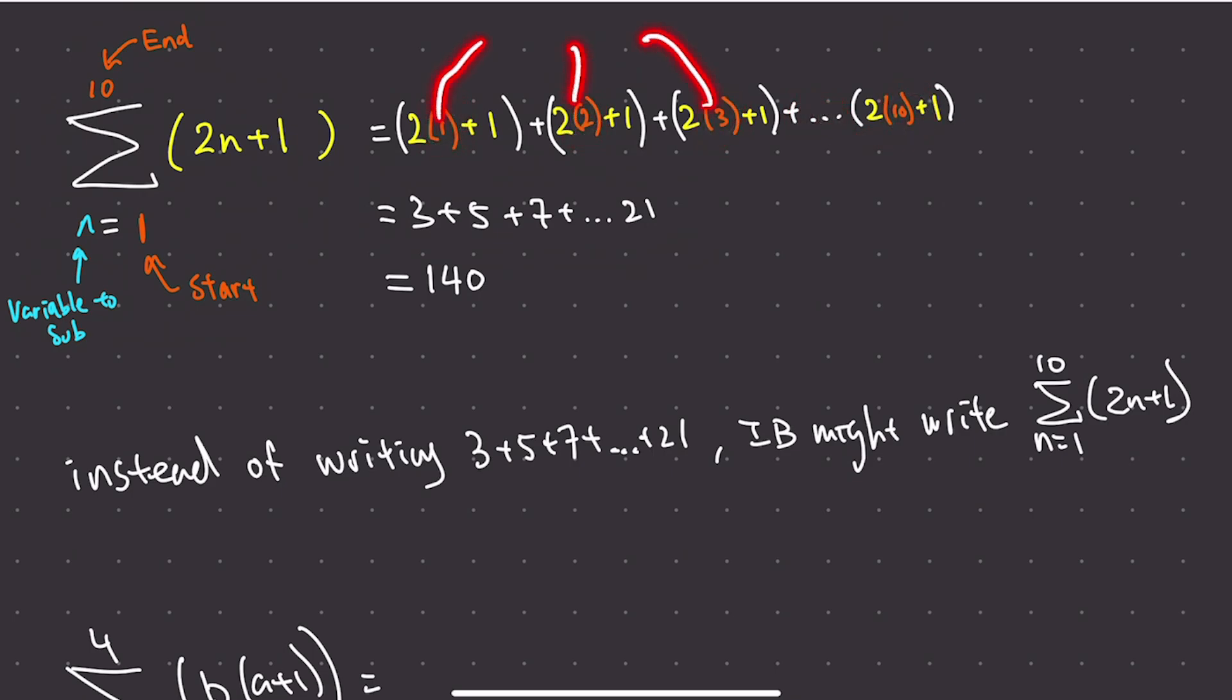So this orange number always increases by 1. If this is starting at 1, then this will be 1, 2, 3, 4. If this is starting at 2, and this is at 10, then we start at 2, 3, 4, 5, 6, 7, 8, 9, 10. Does that make sense?